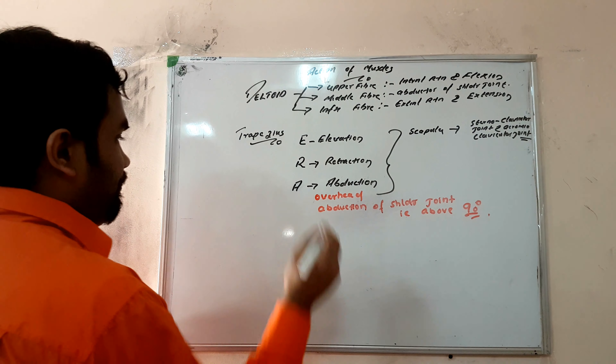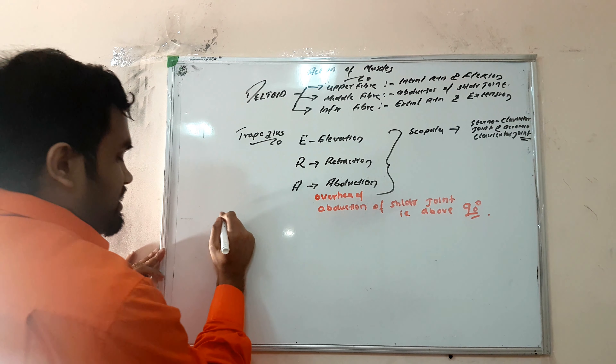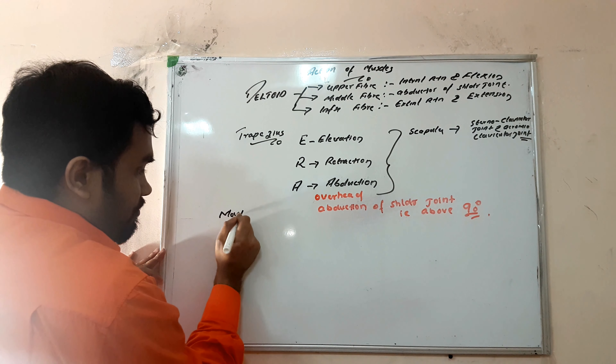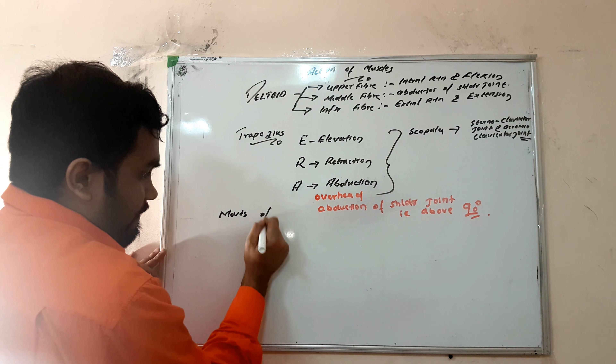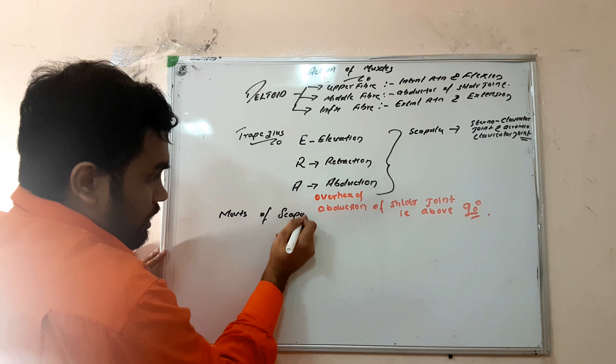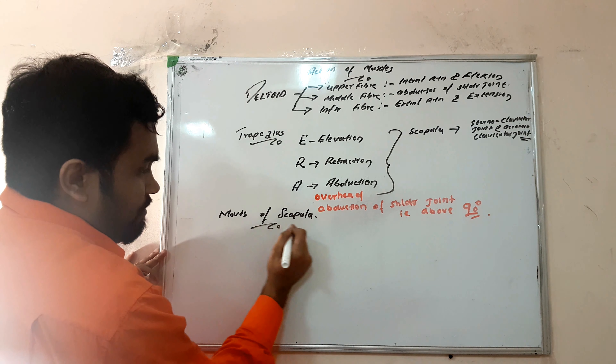Next we are going to discuss an important topic - the action of muscles. We will discuss the action of each muscle according to the joint. First, we will discuss the important muscle that is the deltoid. The deltoid has three fibers - upper fiber, middle fiber, and inferior fiber.